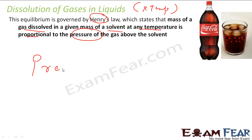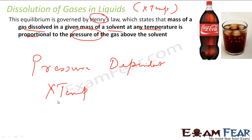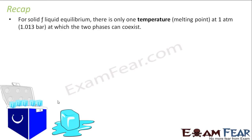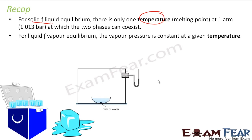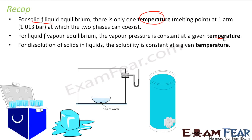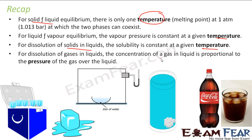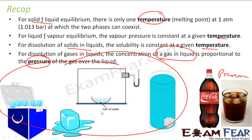It is pressure dependent, not temperature dependent. So let's do a recap: for a solid-liquid equilibrium, it exists only at one temperature — the melting point. For a liquid-vapour equilibrium, it also exists at a constant temperature. For a solid-solution equilibrium, it is also temperature dependent. But for gas-liquid equilibrium, it depends on pressure. So these three — solid-liquid, liquid-vapour, and solid-solution — are temperature dependent, while gas-liquid equilibrium is pressure dependent. Think of Coca-Cola: the moment you open the bottle, you get the bubbles — that is gas-liquid equilibrium and it is pressure dependent.